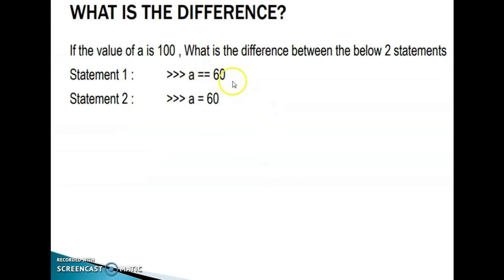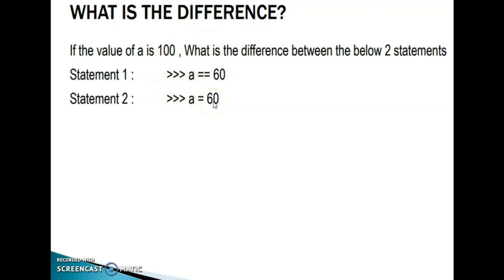What is the difference between a equal to 60 and a equal to equal to 60? If the value of a is 100, a equal to equal to 60 uses the comparison operator — it checks the condition. 100 equal to equal to 60 will return false. In the next statement, a equal to 60 means we are assigning the value 60 to the variable a. Equal to (=) is the assignment operator, and equal to equal to (==) is the comparison or relational operator.